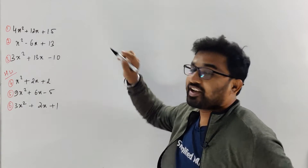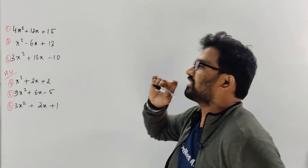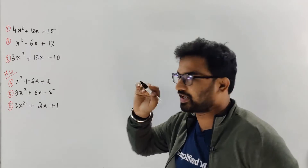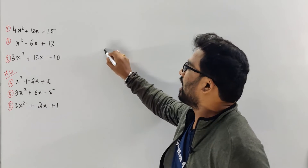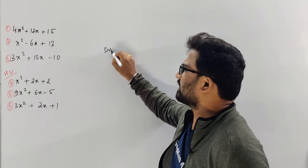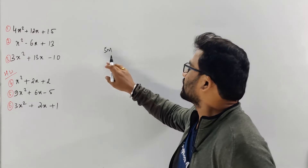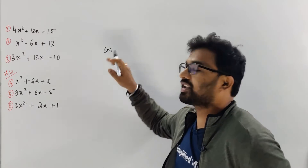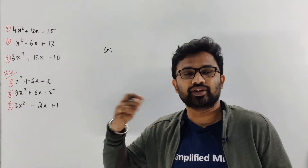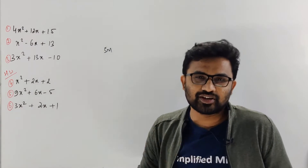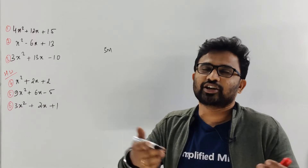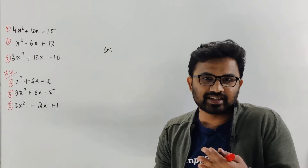For example, in relations and functions and even in 5-mark questions — I think exercise 1.3 mostly. A 5-mark question will ask you to find the inverse. Find the inverse of it. Check whether the inverse exists or not.